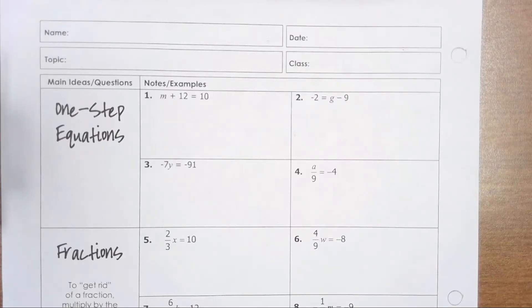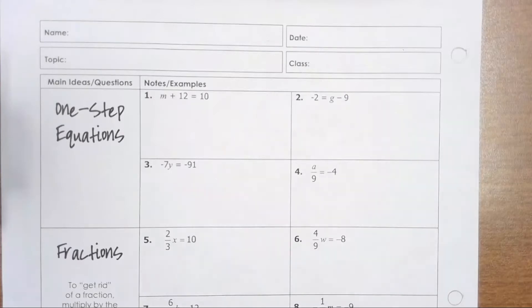When you solve equations, your goal is to get the variable on one side and every other number on the other side, so that when you are done you have something like x equals 10 or w equals negative 50. So to do this, let's talk about one-step equations first.